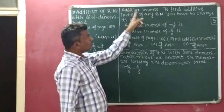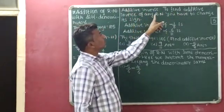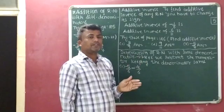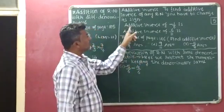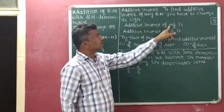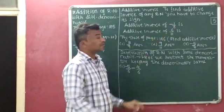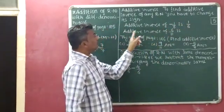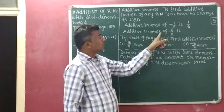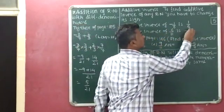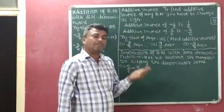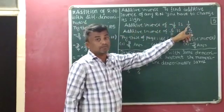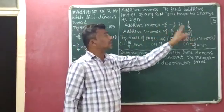Now we will discuss additive inverse. To find the additive inverse of any rational number, you have to change its sign. If it is a positive rational number, write a negative sign; if it has a negative sign, write a positive sign. For example, the additive inverse of minus 1 by 6 is positive 1 by 6, and the additive inverse of 6 by 11 is negative 6 by 11.